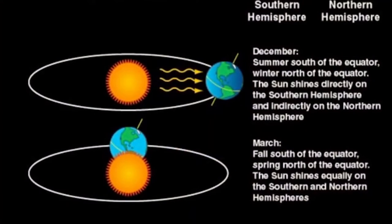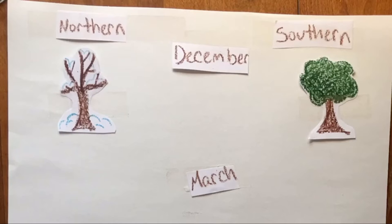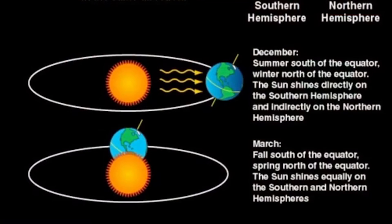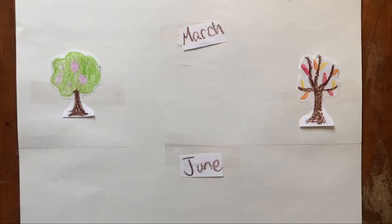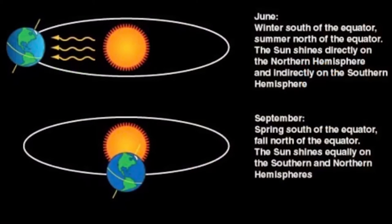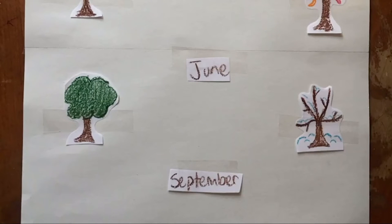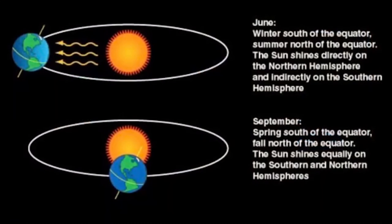Next we can use our guide to tape down our seasons. So for December, it is winter in the north and summer in the south. In March, it is spring in the north and fall in the south. In June, it is summer in the north and winter in the south. And finally in September, it is fall in the north and spring in the south.